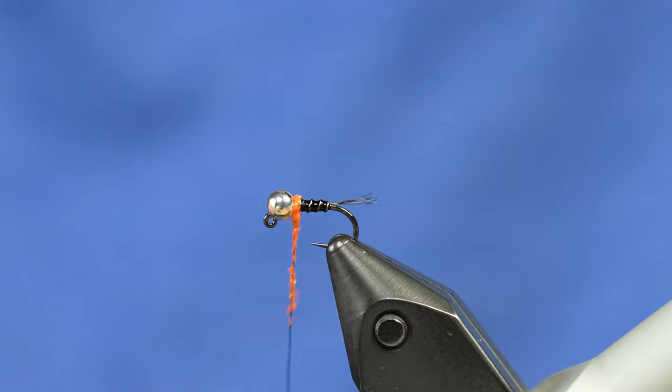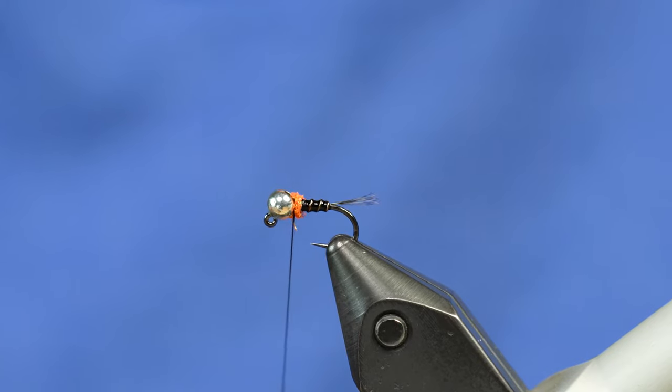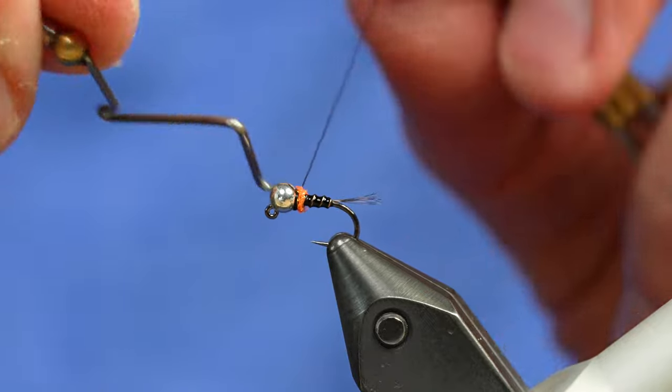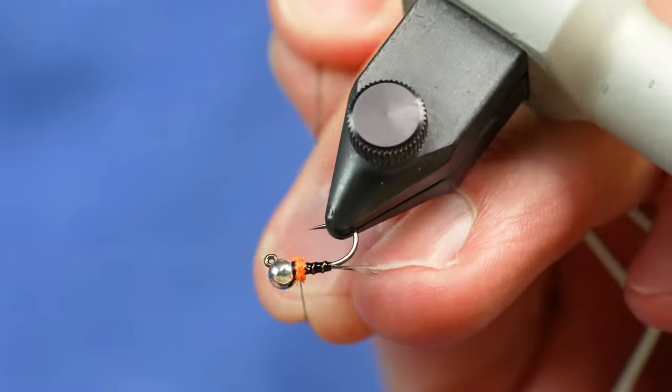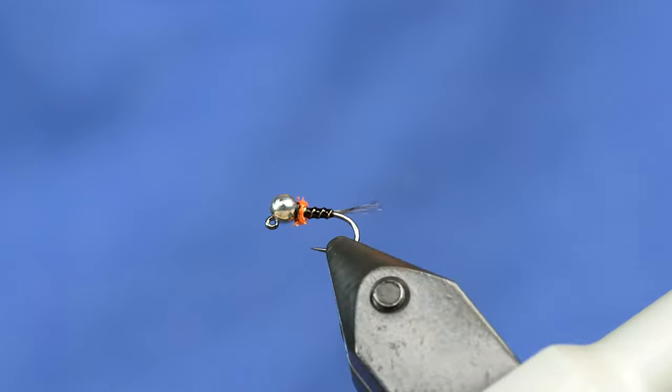And we're just going to build a little collar right behind the bead. Really straightforward, really easy, really simple, quick tie. We're going to whip finish behind the bead and pull tight on the thread. Get rid of the excess and we're all done.